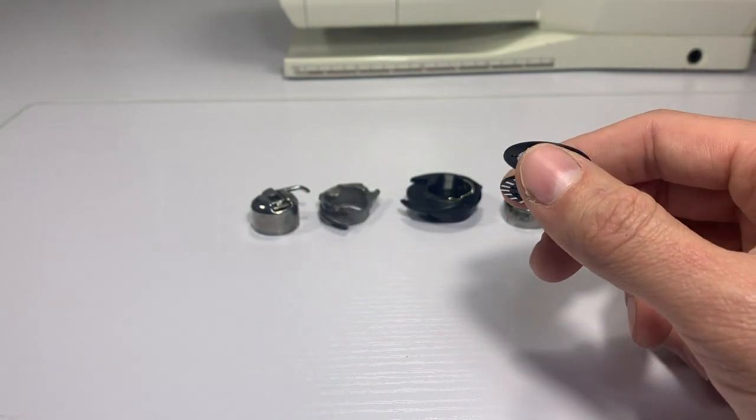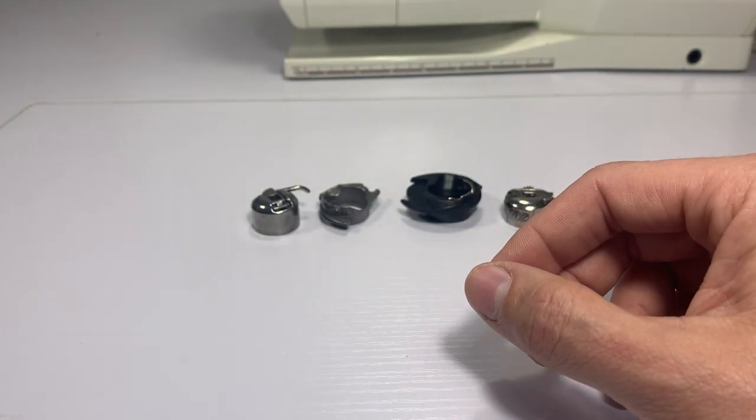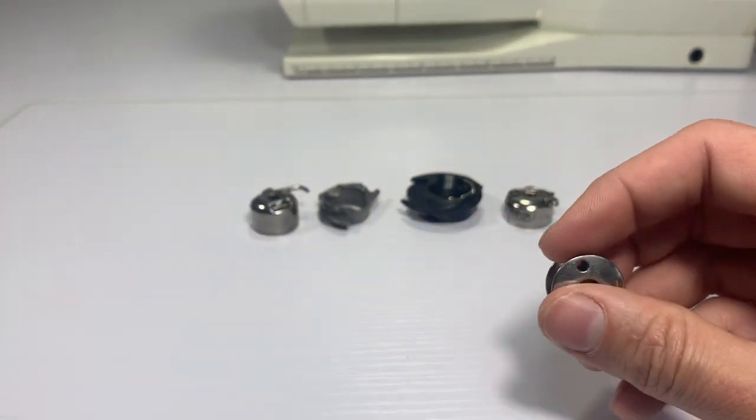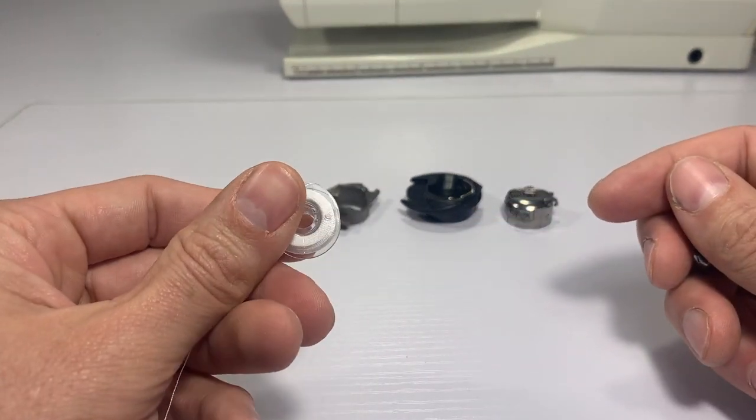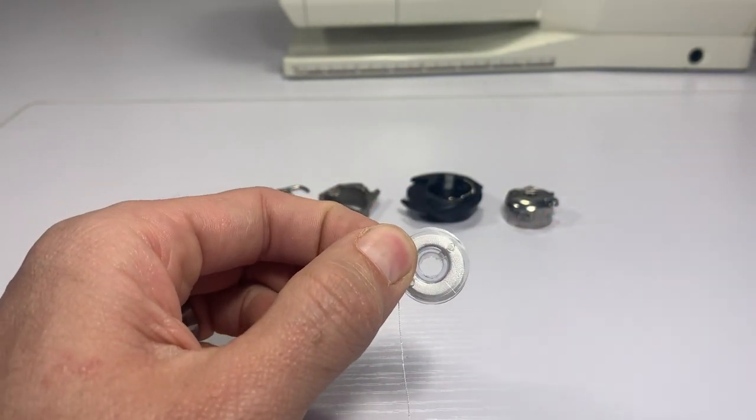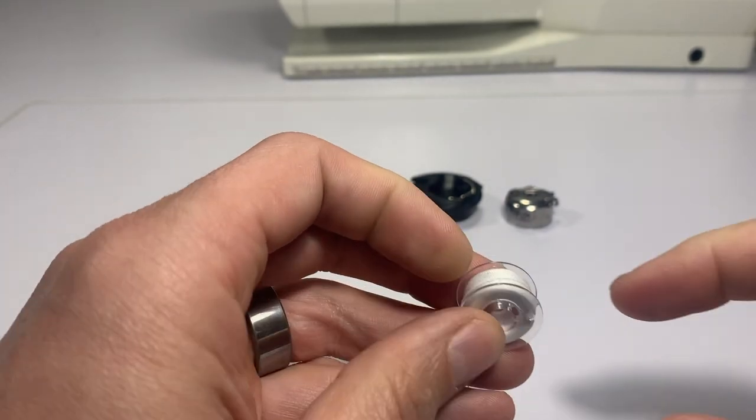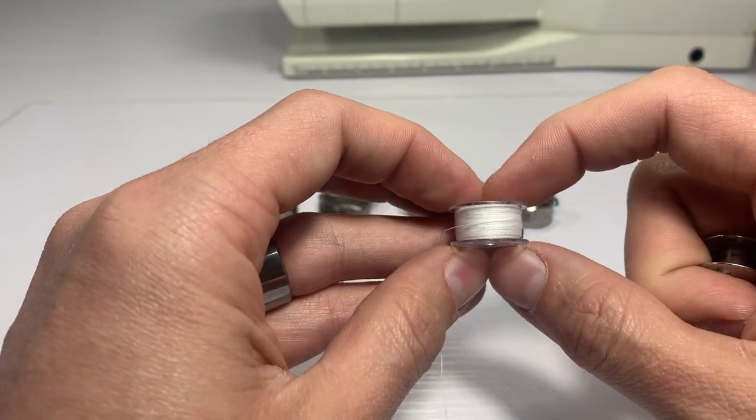Now that brings us to bobbins. Often times people will come into the store and ask for universal bobbins which purely do not exist. Now with that, I would say that these are often sold as universal bobbins. Often times they're referred to as class 15 bobbins and they're offered in both metal and plastic. Both sides are flat.